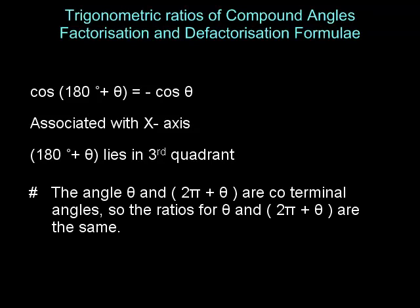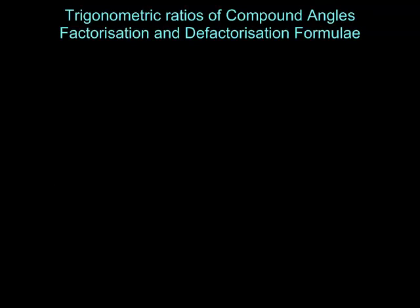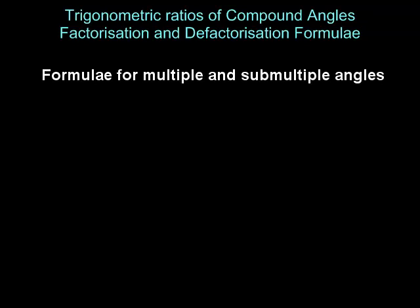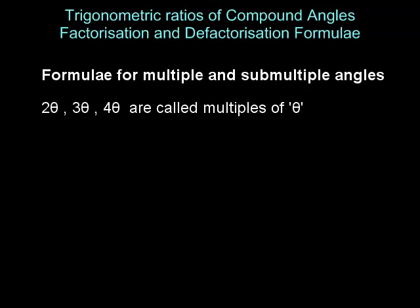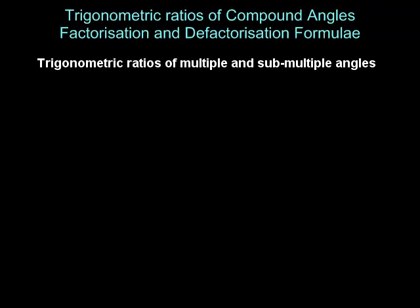The angles theta and 2 pi plus theta are coterminal angles, so the ratios for theta and 2 pi plus theta are the same. We now discuss formulae for multiple and submultiple angles. 2 theta, 3 theta, 4 theta, etc., are called multiples of theta. Theta by 2 is a submultiple of theta. We now discuss expressions for the trigonometric ratios of angles 2 theta, 3 theta, and theta by 2 in terms of theta.